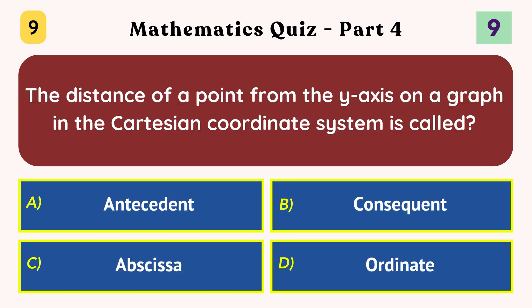The distance of a point from the y-axis on a graph in the Cartesian coordinate system is called? Abcissa.